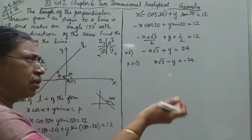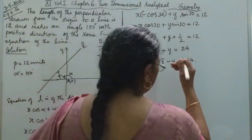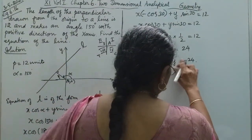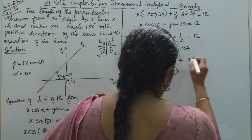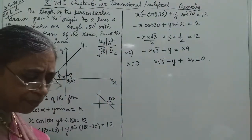Rearranging, we can write: minus x√3 + y + 24 = 0. This is the required equation of the line.